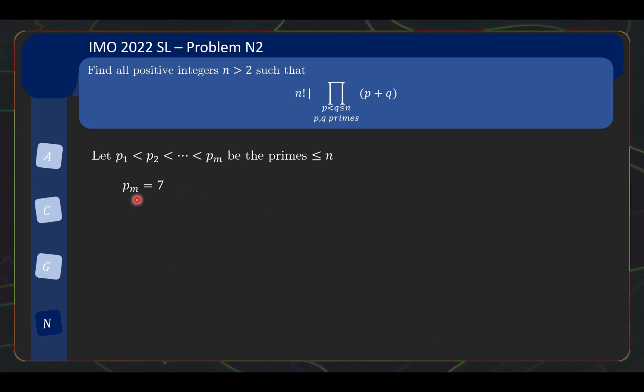Once we have the largest prime being 7, this tells us that n must be 7, 8, 9, or 10. It's now a matter of checking that n equals 7 works, but 8 doesn't work. If 8! doesn't divide this, neither does 9! or 10!, so this is our final answer: n equals 7.